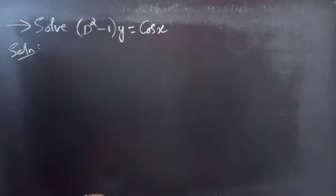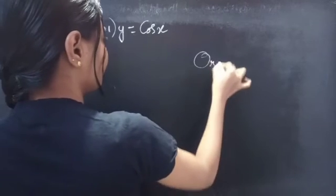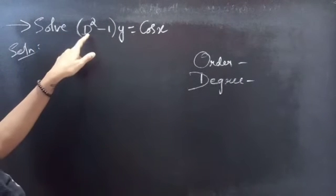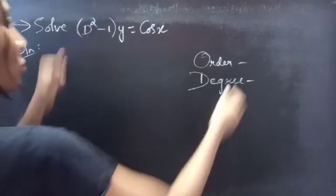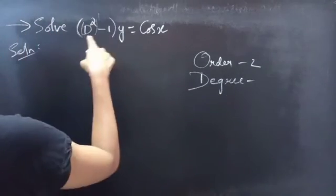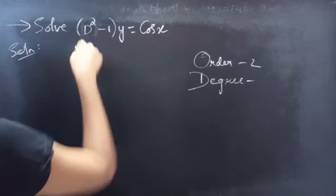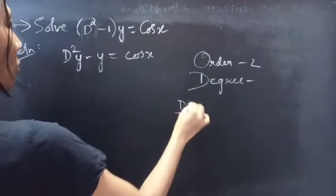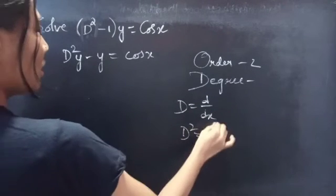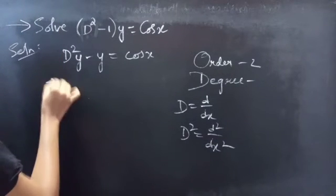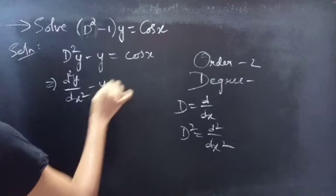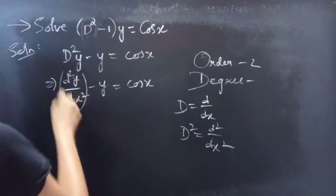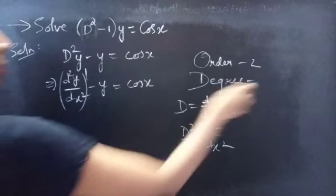Firstly, let's find the order and degree of the given differential equation. Identify the highest derivative in the differential equation. Here, D squared is the highest derivative, so our order will be 2. The highest power of the highest derivative is our degree, so degree will be 1. We can also write the given equation as d²y/dx² minus y equals 2 cos x, confirming order 2 and degree 1.